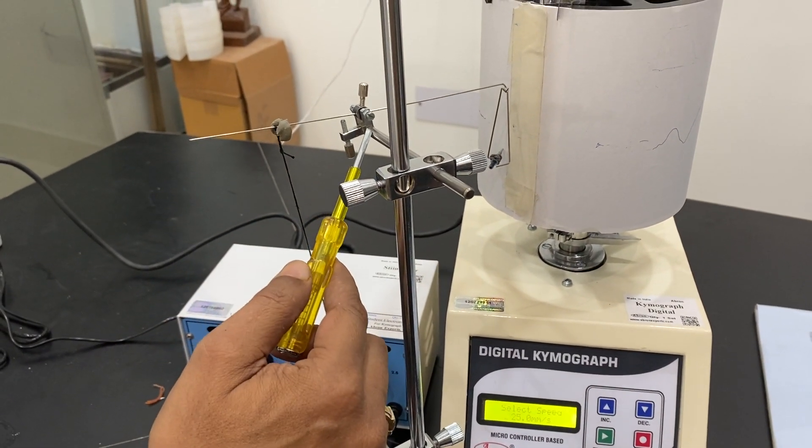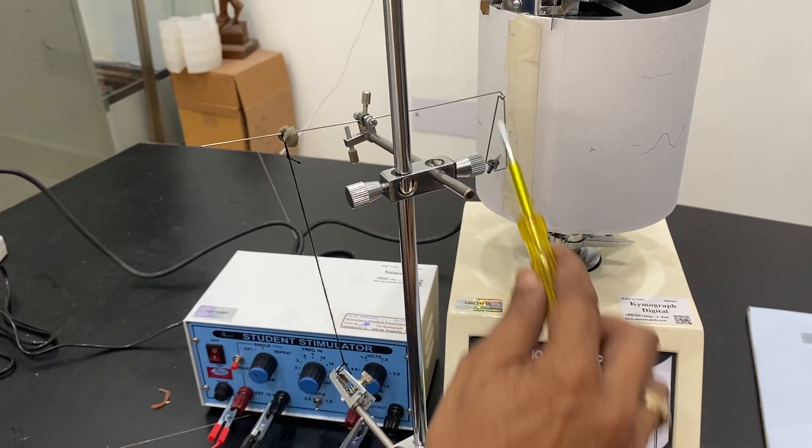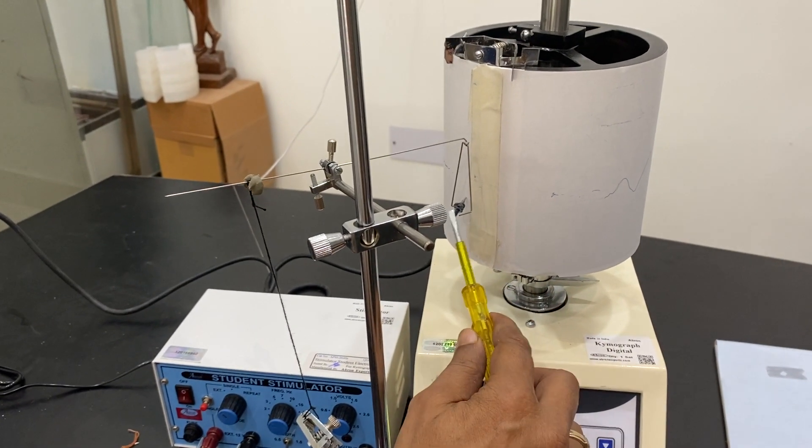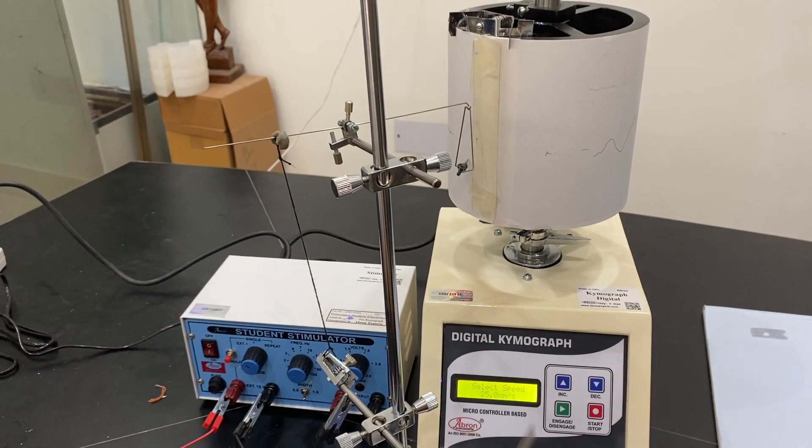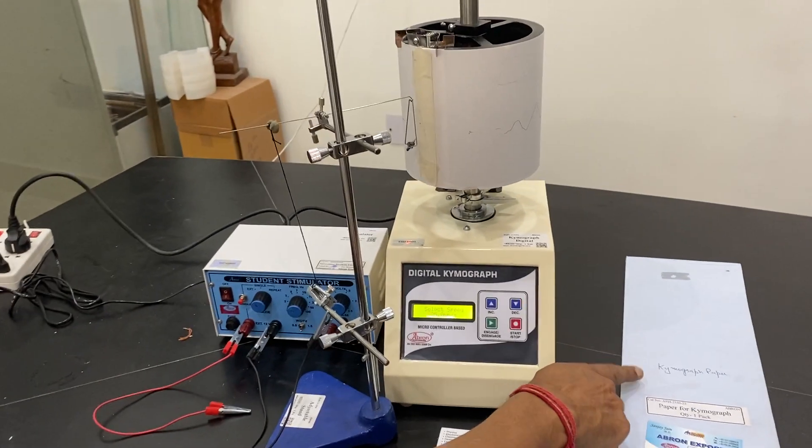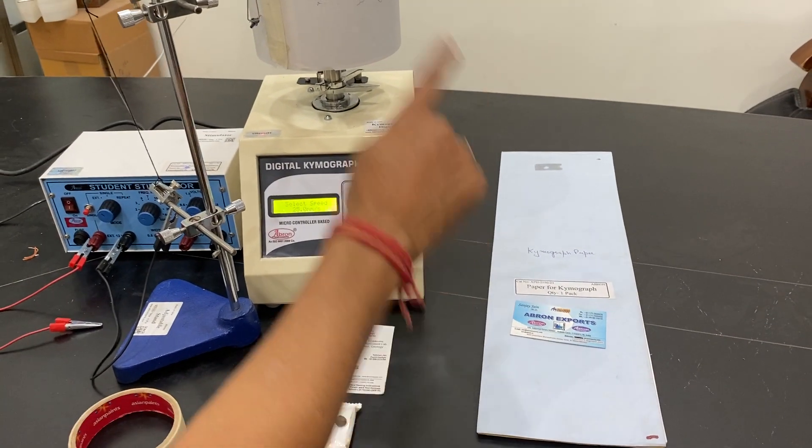We have got a muscle. This is the muscle lever and this is the frontal lever. Now what we have done is we have got the paper which is for the kymograph.